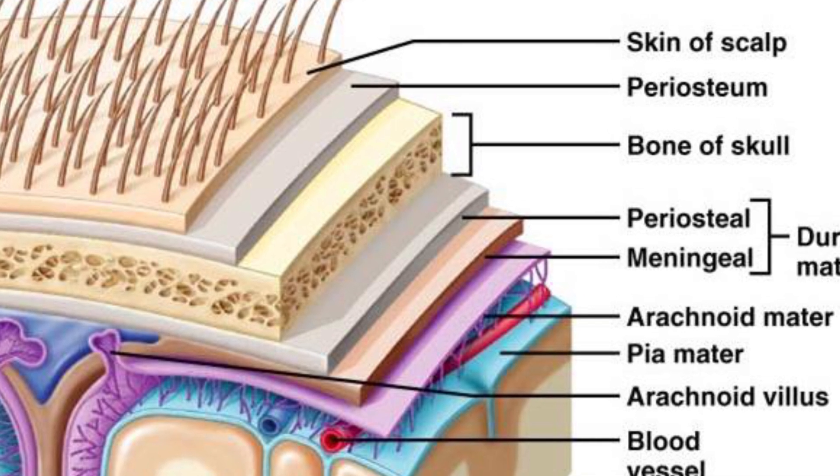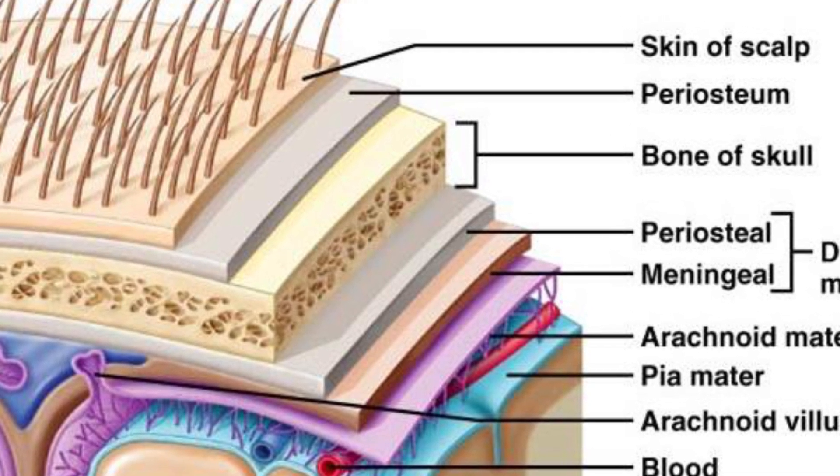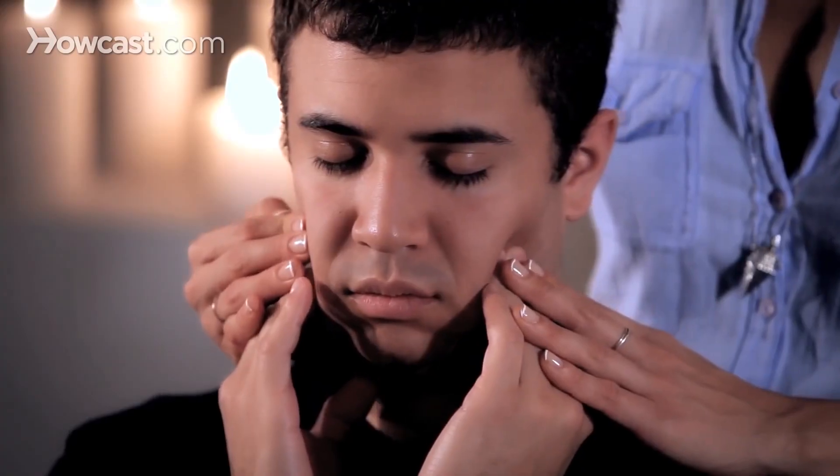The meninges and periosteum, as well as the scalp, all have pain receptors. As such, headaches are caused from the other locations throughout your head, commonly from the jawline, sinus cavities, and neck.